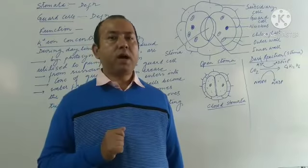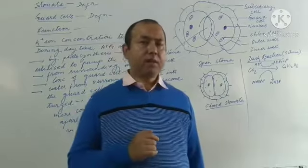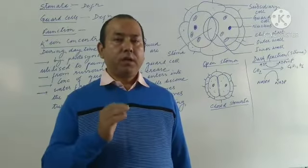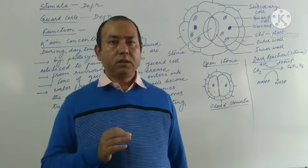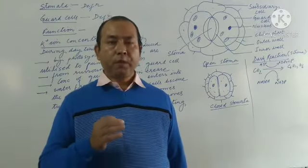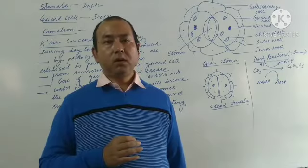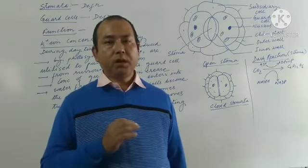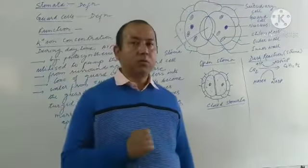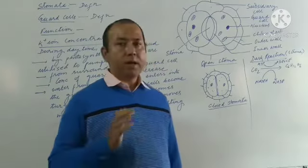So if we are asked to define dark reaction, we can say it is a phase of photosynthesis during which carbon dioxide is fixed or converted into glucose molecule by utilizing the energy of ATP molecules and the reducing power of NADPH to produce glucose molecule. This is how we define dark reaction.